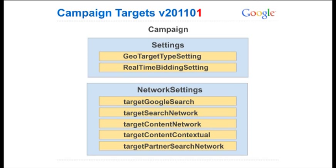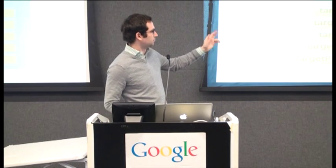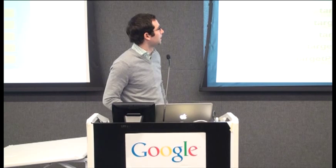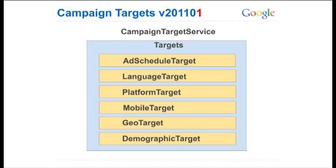Here's how things looked in v201101. At the campaign level within the settings property, you had geo target type, real-time bidding settings, and network settings about Google search, Google search network, content network, content contextual, partner search network, and so on. Within the campaign target service you had the ad schedule target, language target, platform target, mobile target, geo target, and demographic target.